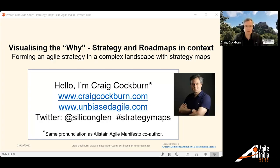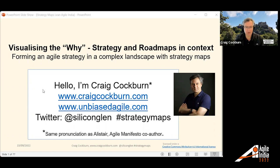Thanks for the intro, and thanks to everybody who's joined — we're 33 people, so thank you for your time. This is 'Visualizing the Why of Movement: Strategy and Road Maps in Context.' It's about agile strategy in a complex landscape and a new practice I call strategy maps. My two main URLs are CraigCoburn.com and unbiasedagile.com, which is about avoiding frameworks and looking more to practices to get better collaboration. I'm on Twitter, and I am in fact distantly related to Alistair Cockburn, one of the co-authors of the Agile Manifesto.